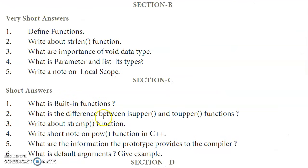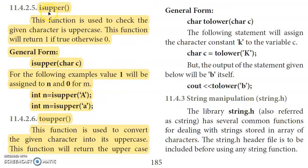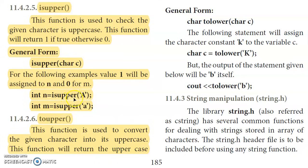Second question: what is the difference between isUpper and toUpper functions? From page 185. The isUpper function is used to check whether the given character is in uppercase. The function returns 1 if it is true, otherwise 0. The general form is: isupper(c), where c is the character.